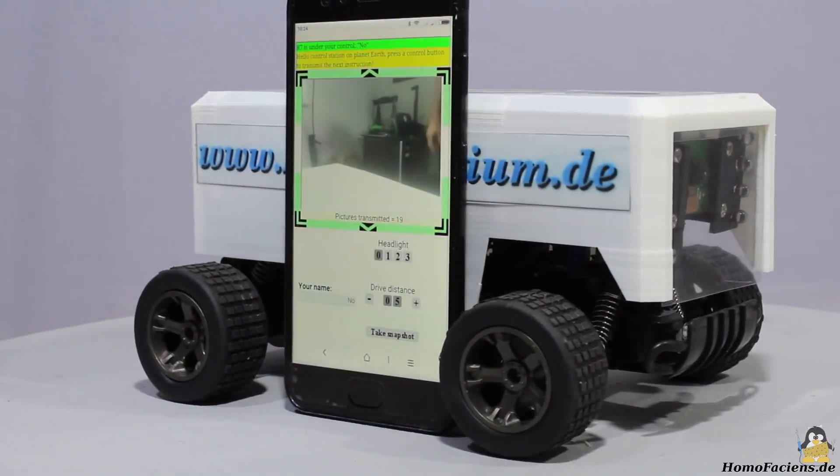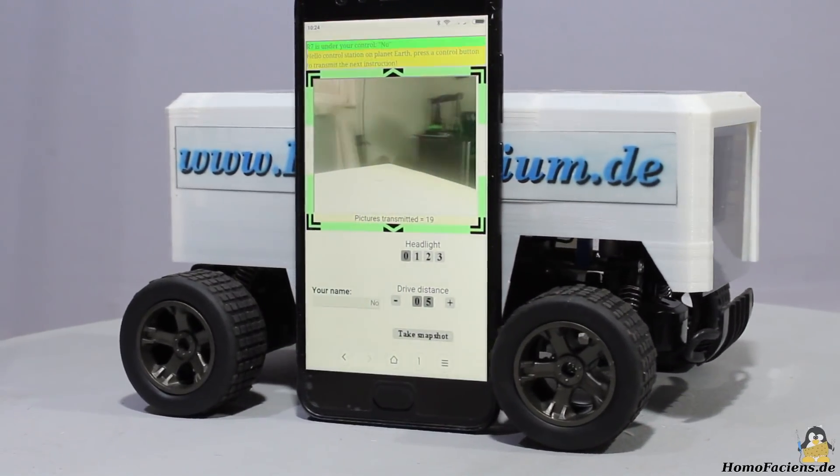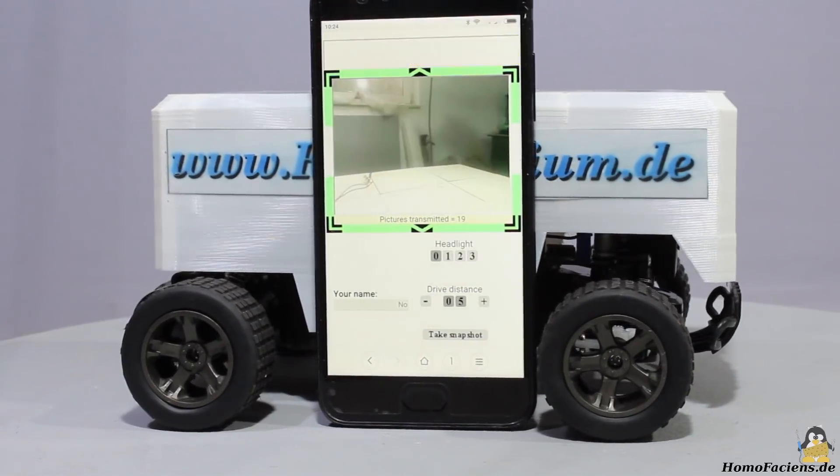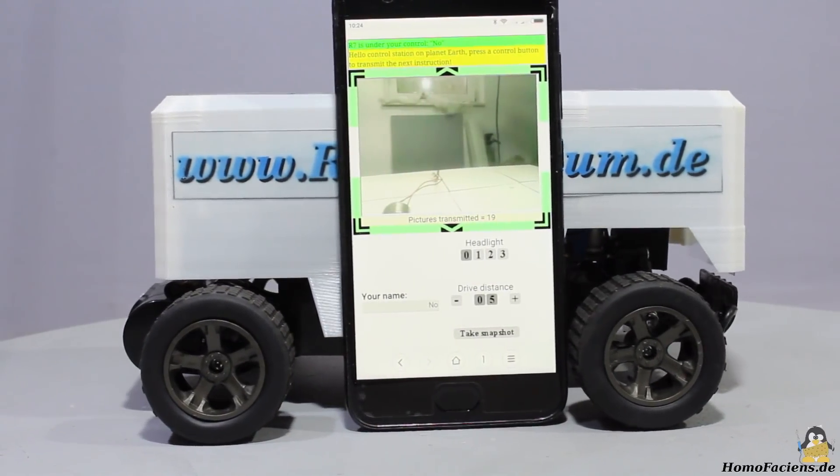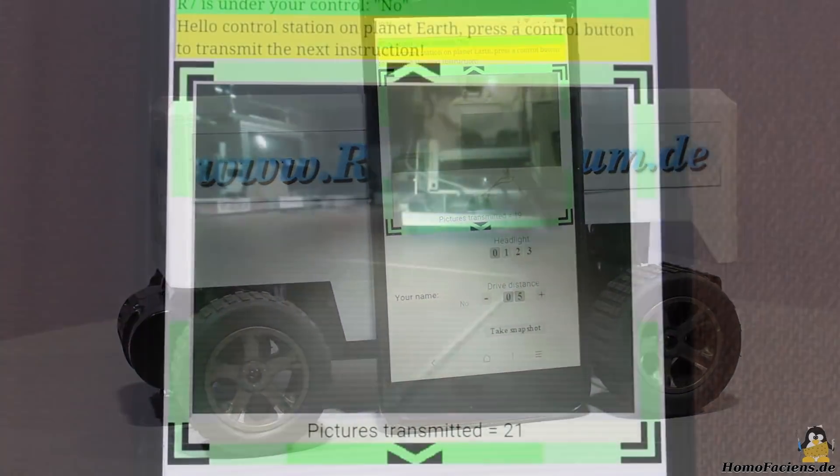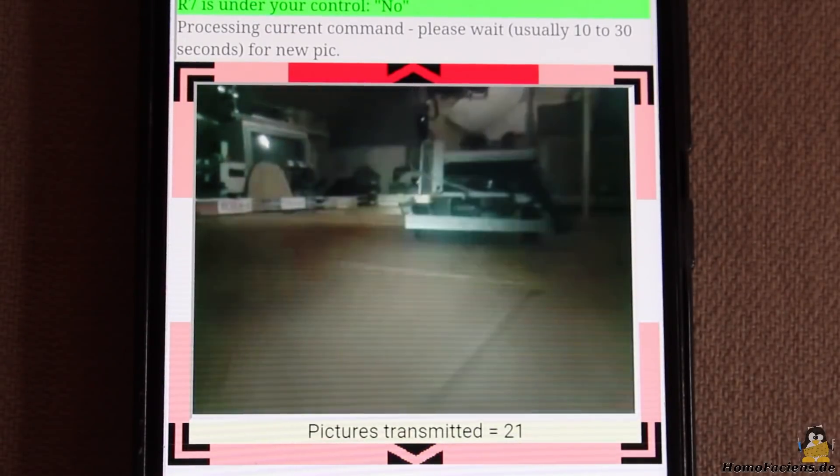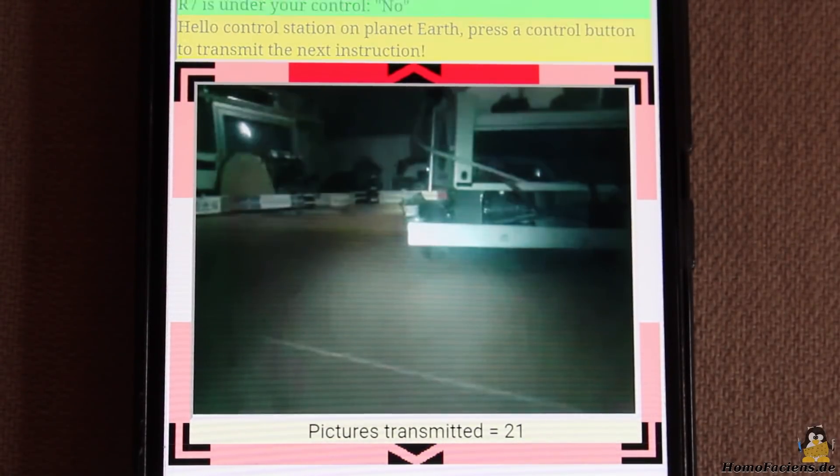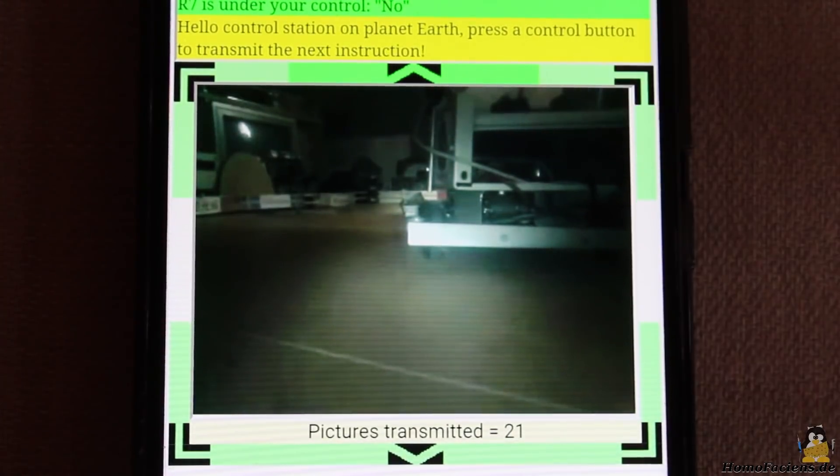With that the conversion is done and now you can remote control the robot through a browser interface, here I am using a smartphone. This is my rover number 7 and same as its predecessors you can drive it in my RoboSpatium, have a test run.